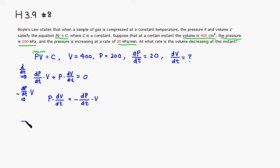Then we can just divide through by P. So divide through by P to get dV/dt is equal to negative dP/dt, and also V was there, but we have to divide by P.